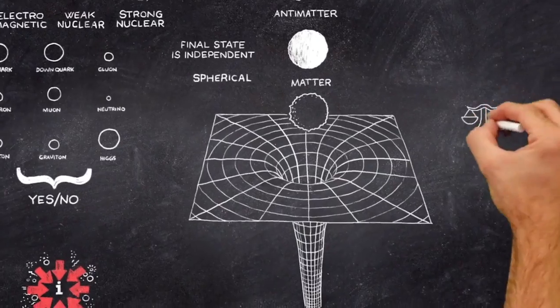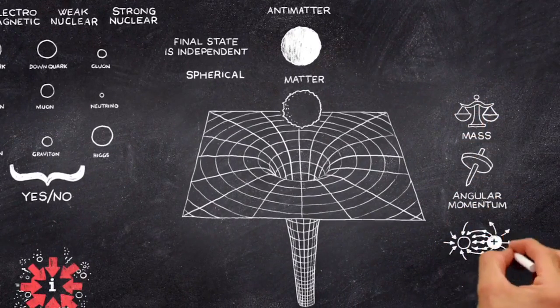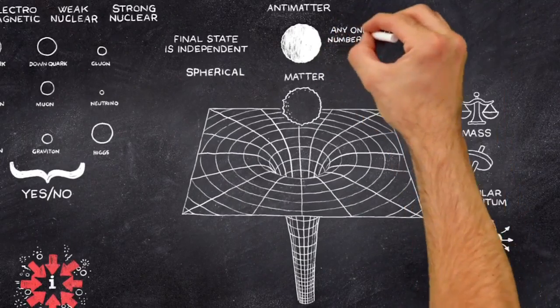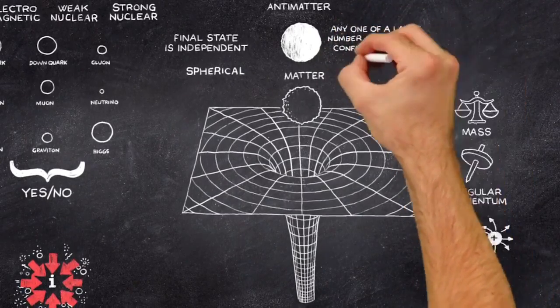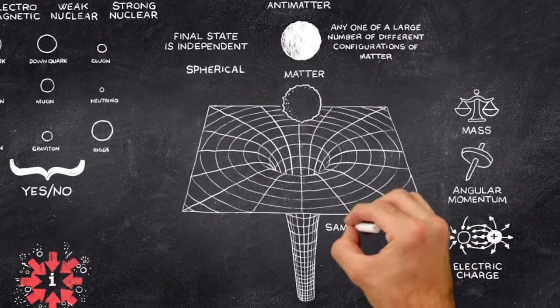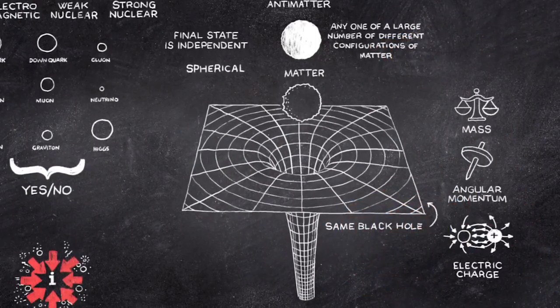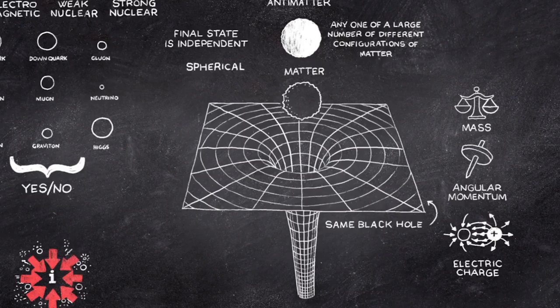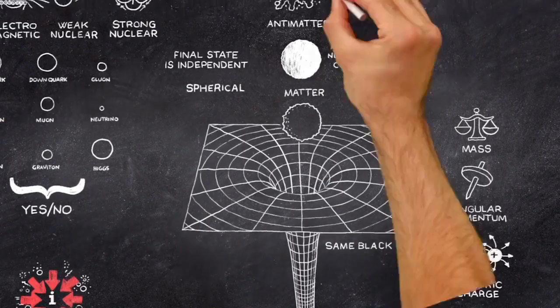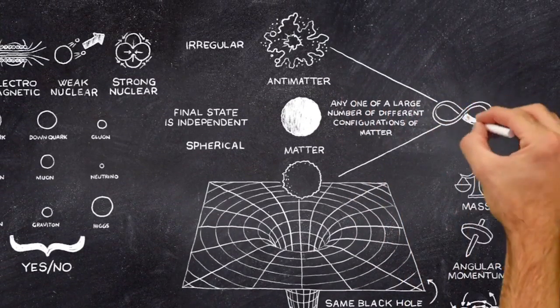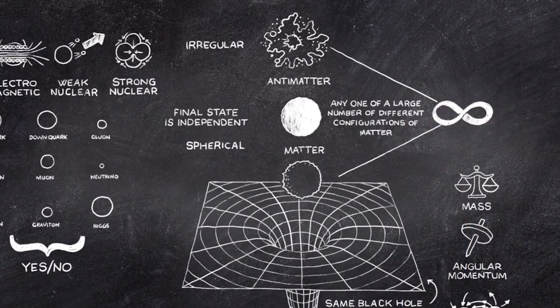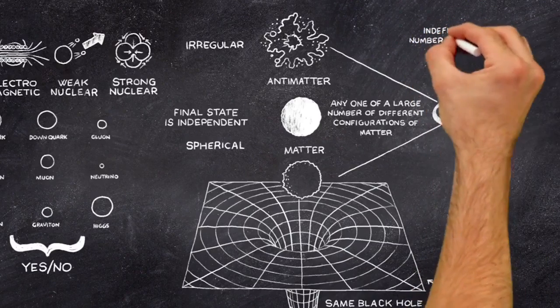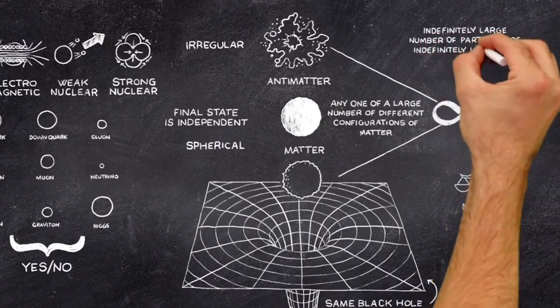In other words, a black hole of a given mass, angular momentum, and electric charge, could have been formed by the collapse of any one of a large number of different configurations of matter. So what appears to be the same black hole could be formed by the collapse of a large number of different types of star. Indeed, if quantum effects are neglected, the number of configurations would be infinite, since the black hole could have been formed by the collapse of a cloud of an indefinitely large number of particles of indefinitely low mass.